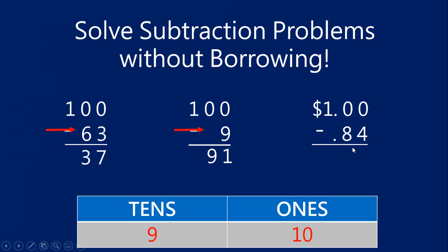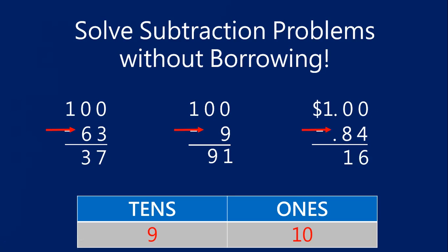Here's a money example. I have a dollar. I go to the store and buy a piece of candy that costs 84 cents — how much change will I get back? Instead of borrowing and subtracting, use the strategy: move left to right, add to nine, add to 10. Eight plus what equals nine? Eight and one. Four plus what equals 10? Four and six. So $1.00 minus $0.84 gives me $0.16 change. This is very helpful when working with money — even if you're working with $2, $3, $10, or $100, any number that ends in zero, you can use this strategy.